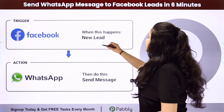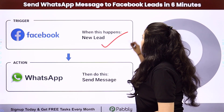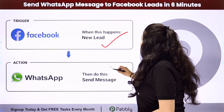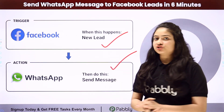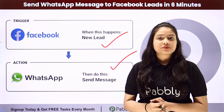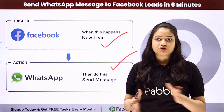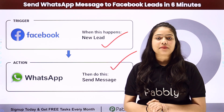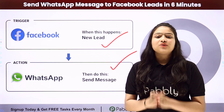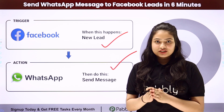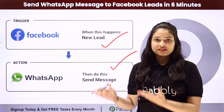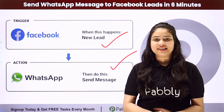We have Facebook lead ads as our trigger and WhatsApp Cloud API as our action. We are going to connect both of them using Pably Connect to automate this entire process. To learn this step by step, let me take you to my screen.